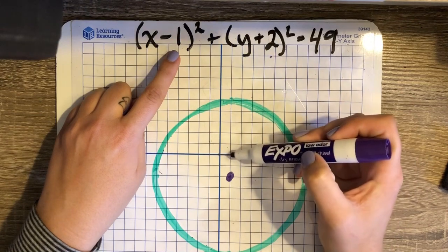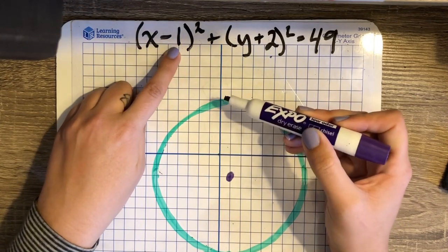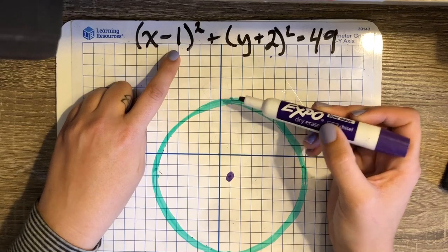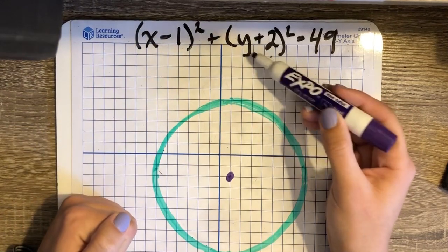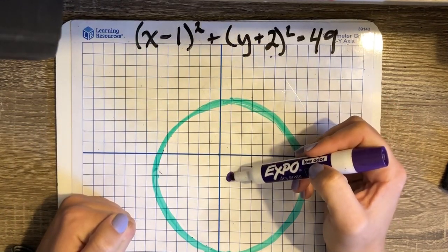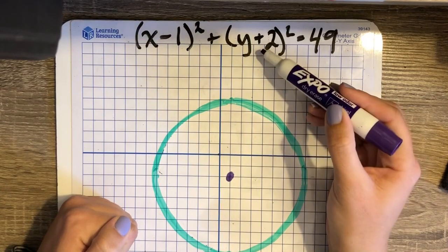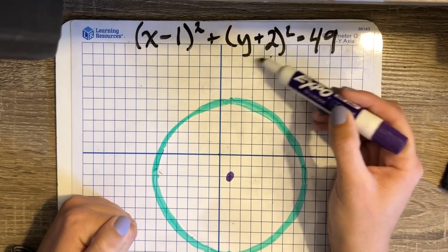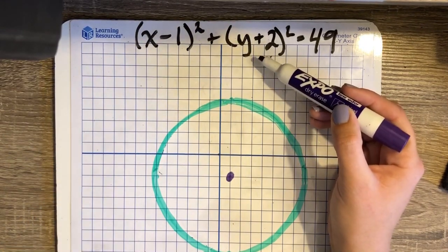So since my x value of the center is a positive 1, this becomes x minus 1. The sign changes. Same thing with my y. The y value of the center is negative 2, so this becomes minus negative 2 or just positive 2. We're changing the sign.